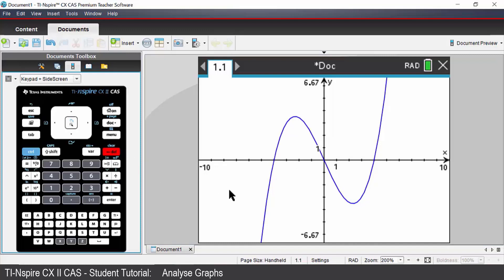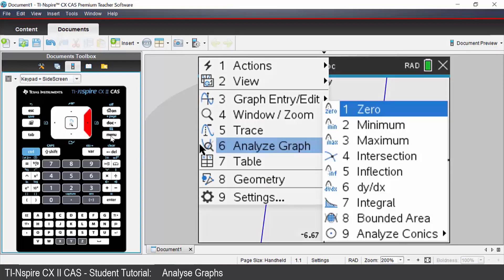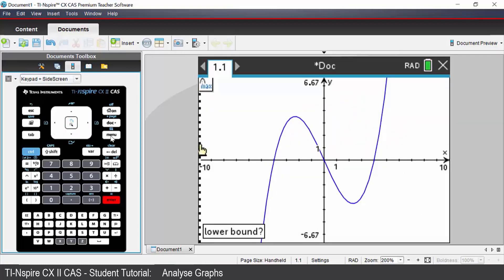The next thing we will do is find the coordinates of the local maximum turning point on this cubic. To do that we would again go to the menu key, come down to option 6 which is Analyze Graph, and we're going to choose option 3 which is maximum. Now maximum will find the maximum value of the function over any given domain. So lower bound I'm going to click just to the left of my local maximum.